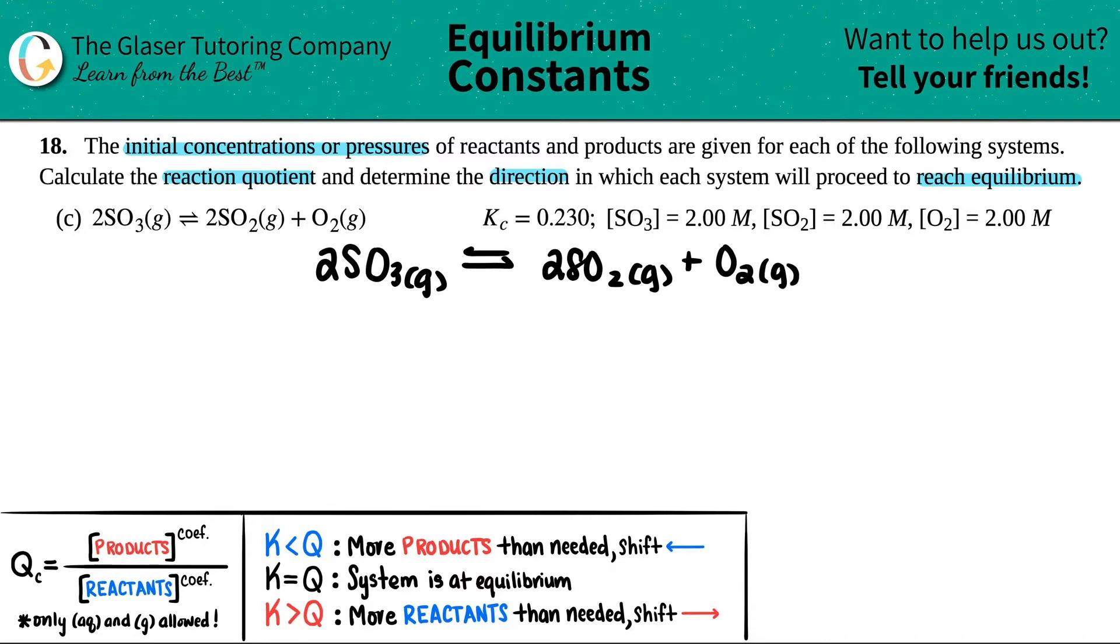The next thing I'm going to do is write out the initial concentrations that they gave me. They all seem like they're 2 molarity. SO3 was 2.00 molarity, the SO2 was also 2 molarity, and then the O2 was 2 molarity.